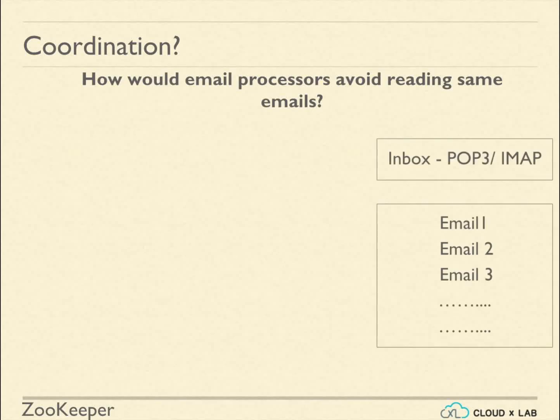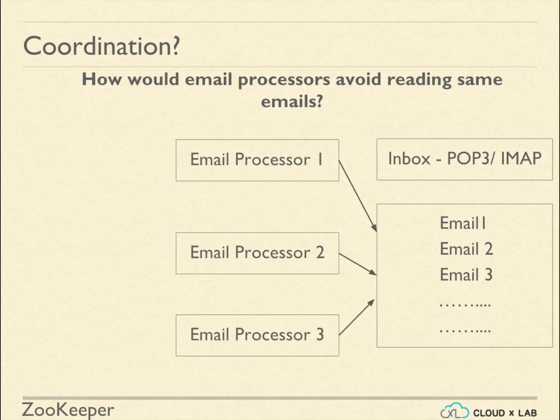There is an inbox from which we need to index email. Indexing is a heavy process which might take a lot of time. So we have multiple machines which are indexing the emails.